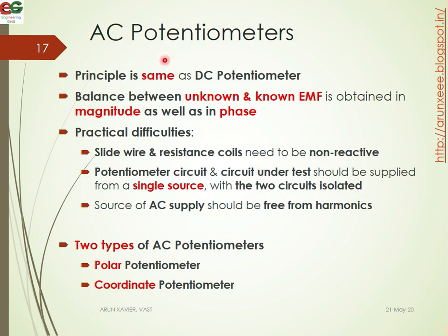So what is AC potentiometers? The principle of AC potentiometers is the same as DC potentiometers. The balance between unknown EMF and reference EMF is obtained in magnitude as well as in phase. If we have both magnitude and phase angle, that is the main advantage of AC potentiometers compared to DC, where we will not get any phase angle.